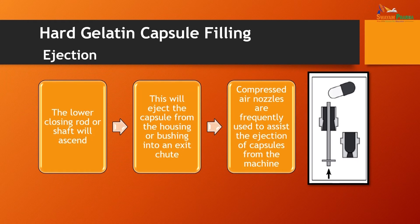In the ejection step of capsule filling, the lower closing rod or shaft ascends, moving upward to eject the capsule from the housing or bushing into an exit tube. Compressed air nozzles are frequently used to assist this ejection of capsules from the machine, particularly with fully automatic filling machines.